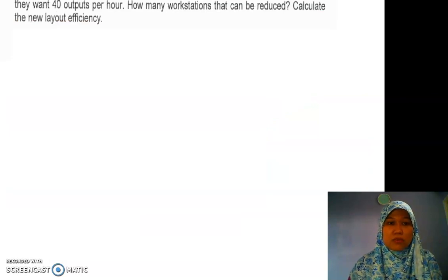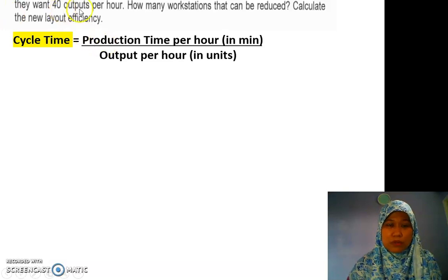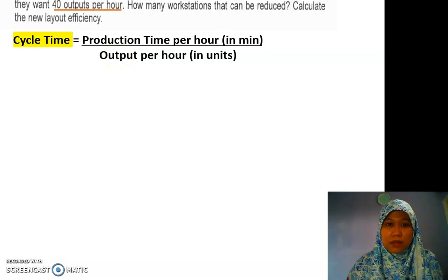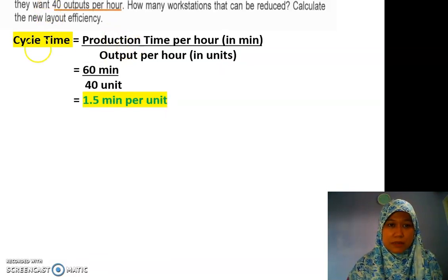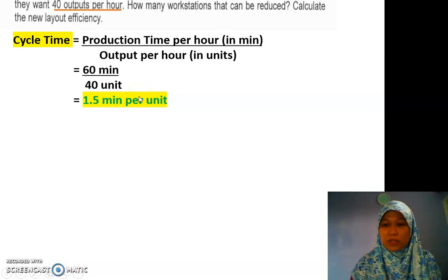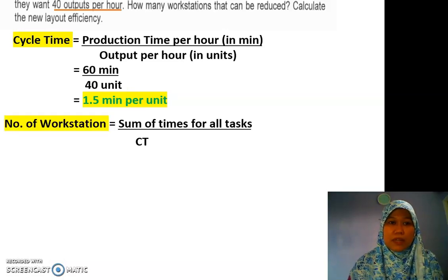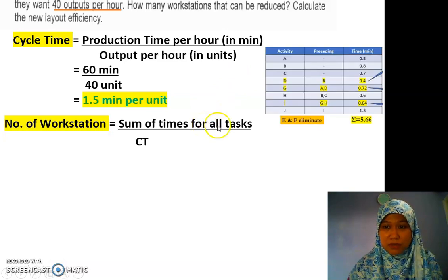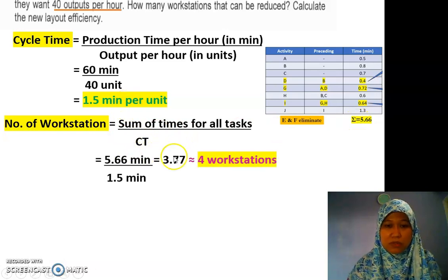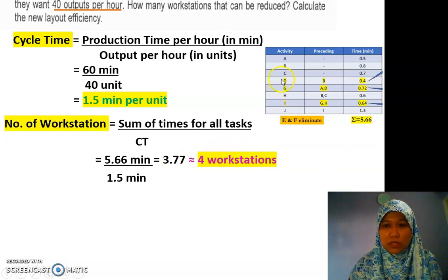First we calculate the new cycle time. Based on the output of 40 per hour, we have 60 minutes divided by 40 units, giving 1.5 minutes per unit. Then we calculate the number of workstations. The new sum of all tasks is 5.66 minutes, and our cycle time is 1.5, so the number of workstations is 3.77. For workstations you must round up, so you get 4 workstations.